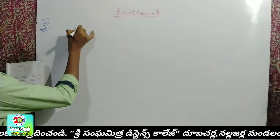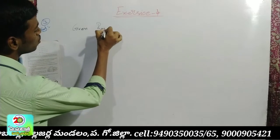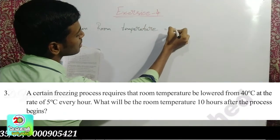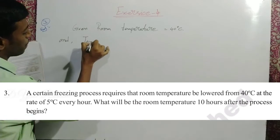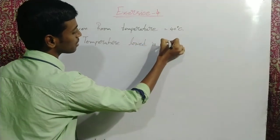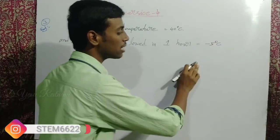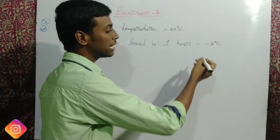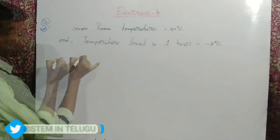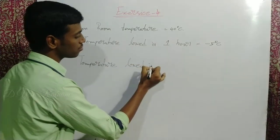I will tell you the solution to this problem. Given: room temperature is 40 degrees Celsius, and the temperature decreases by minus 5 degrees per hour.